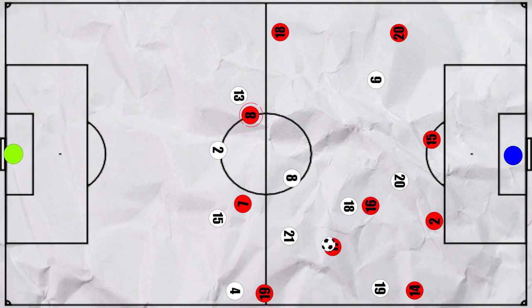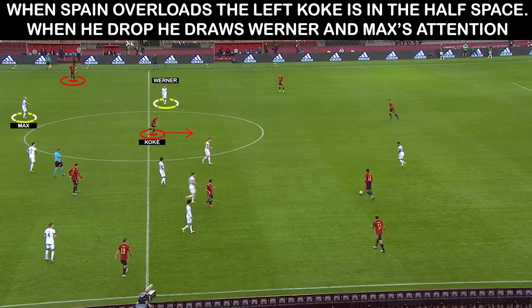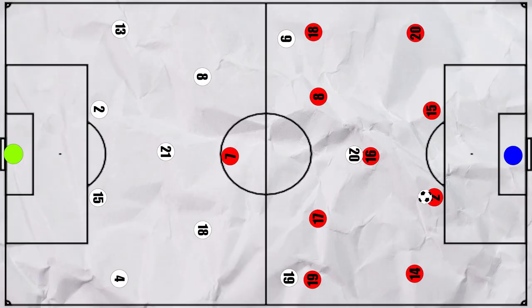However, Spain wanted to retain possession, so we often saw Koke drop into the midfield quickly from that space, often drawing in Werner. And once he received the ball, he would either look to find Roberto or Ferran for a 1v1. This led to many dangerous situations and shots, as Ferran was happy to take on Max.